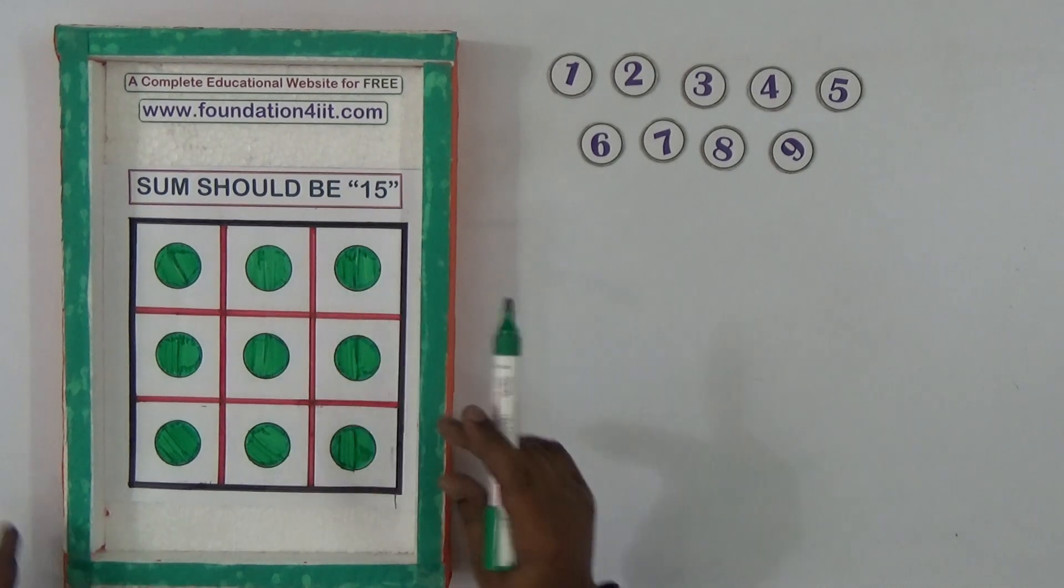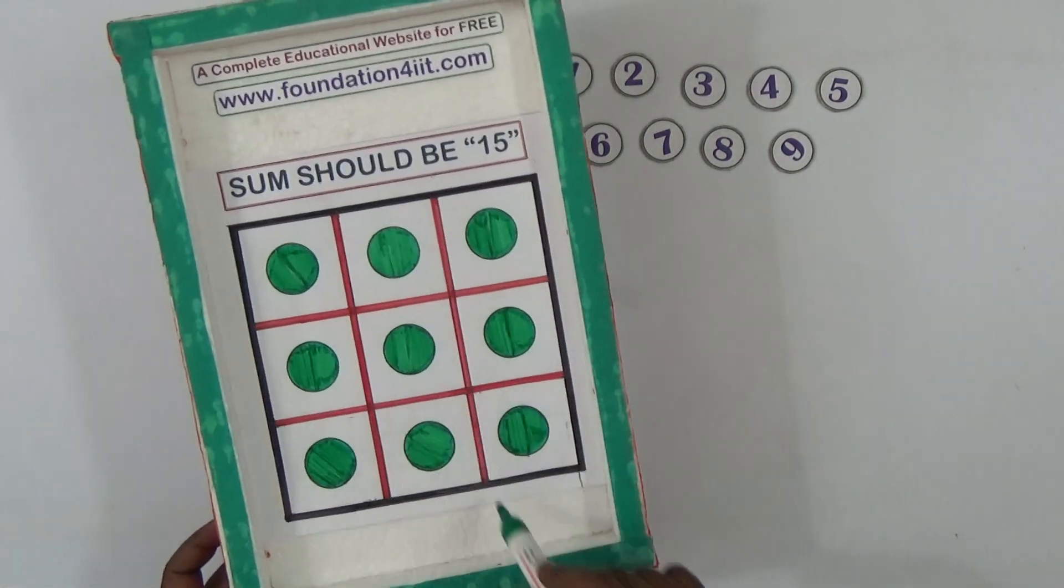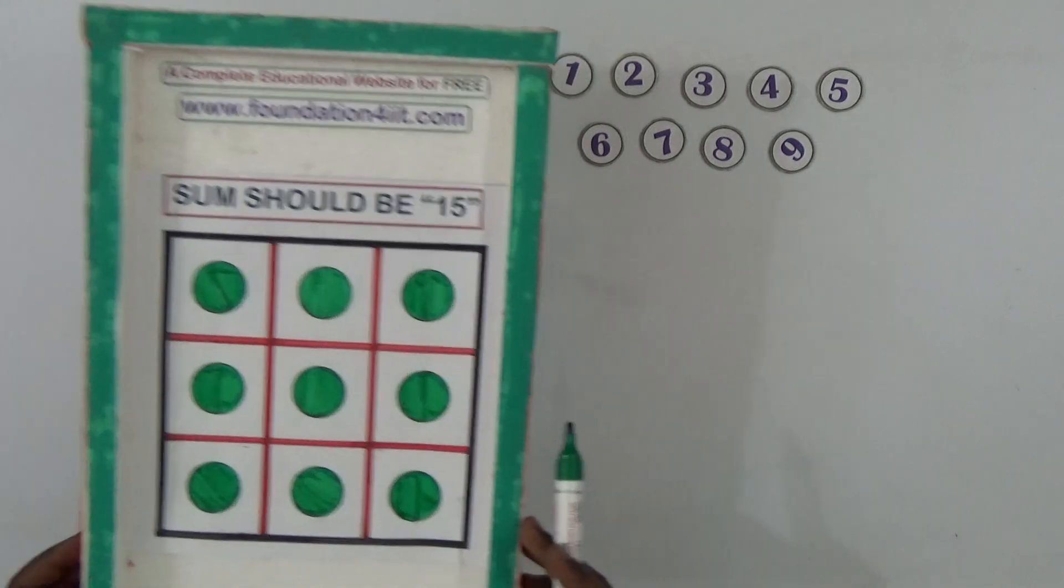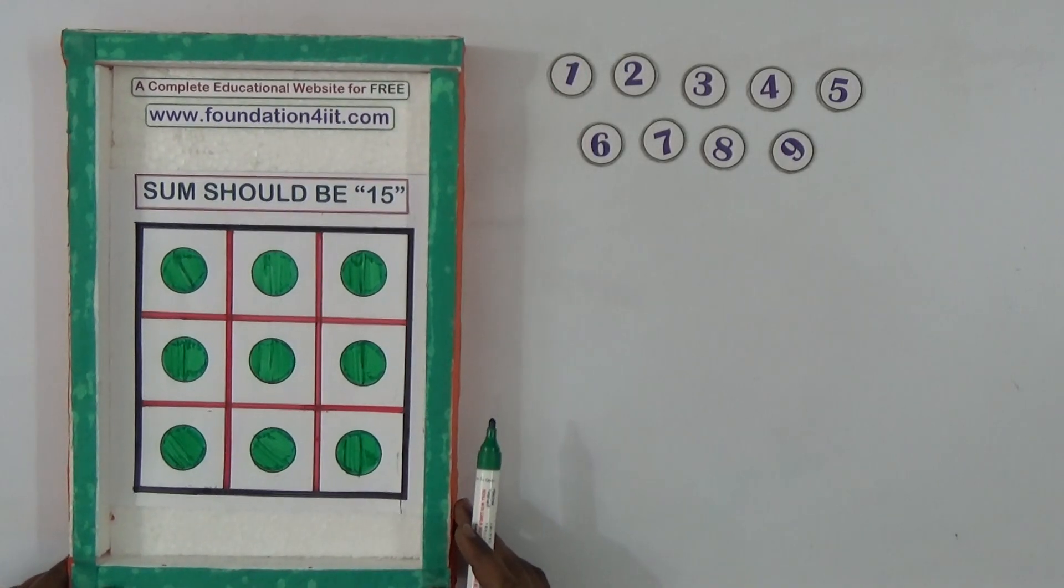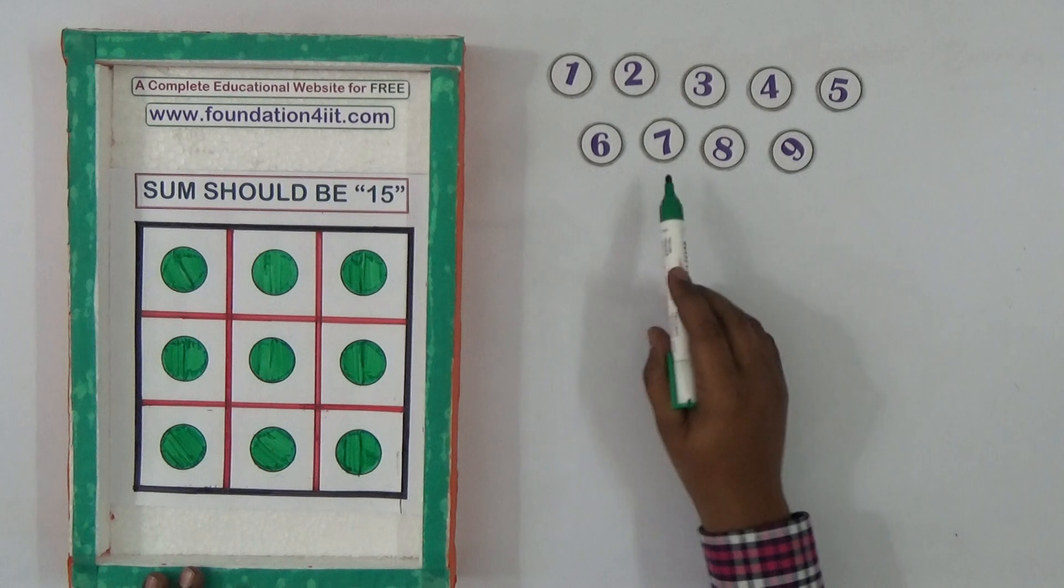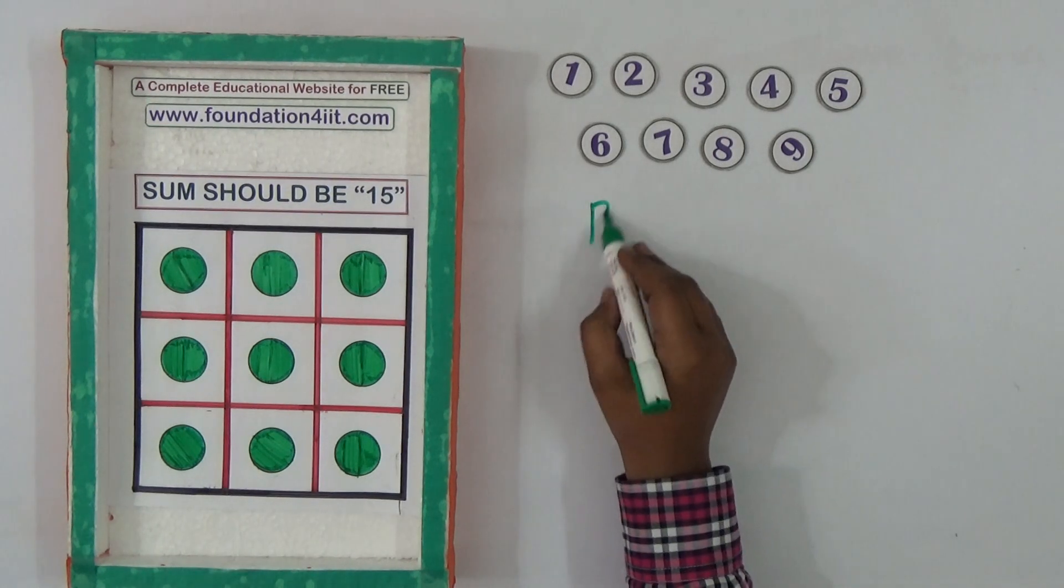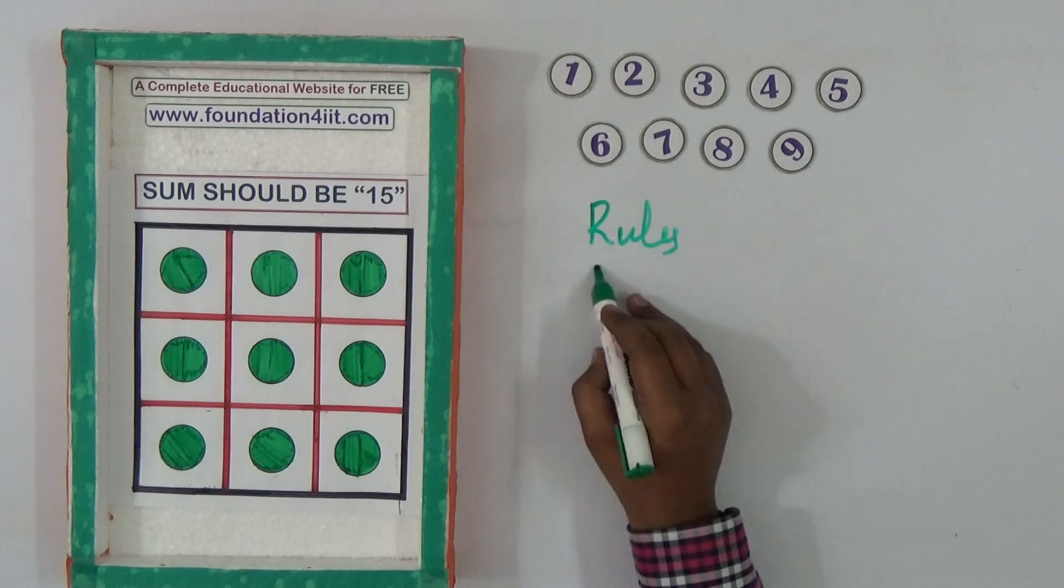This number game is about sum should be 15. This one, three rows and three columns. I prepared just on the thermocol using numbers 1, 2, 3, 4, 5, 6, 7, 8, 9.